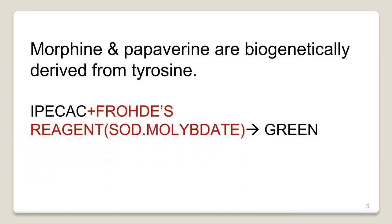Ipecac when treated with Frohde's Reagent — that is sodium molybdate — will give a green color. This green color reaction is the identification test for Ipecac. Sodium molybdate is known as Frohde's Reagent and is used for the identification of Ipecac.